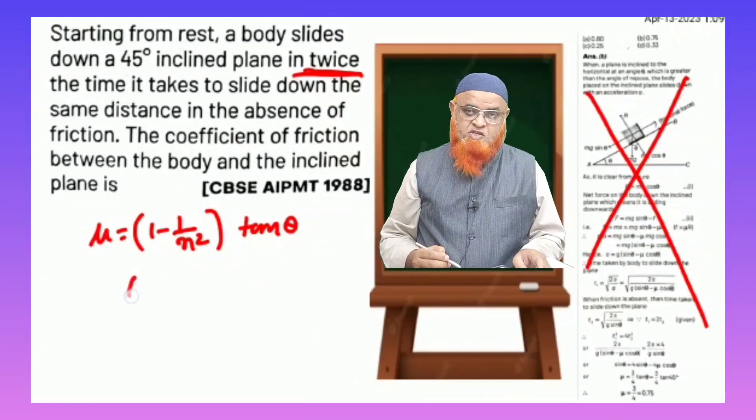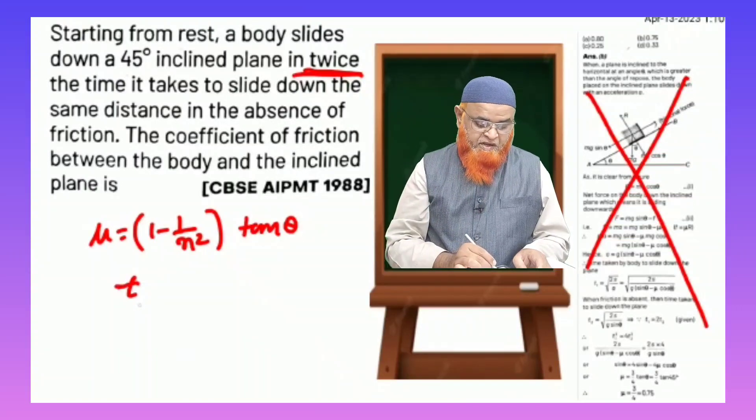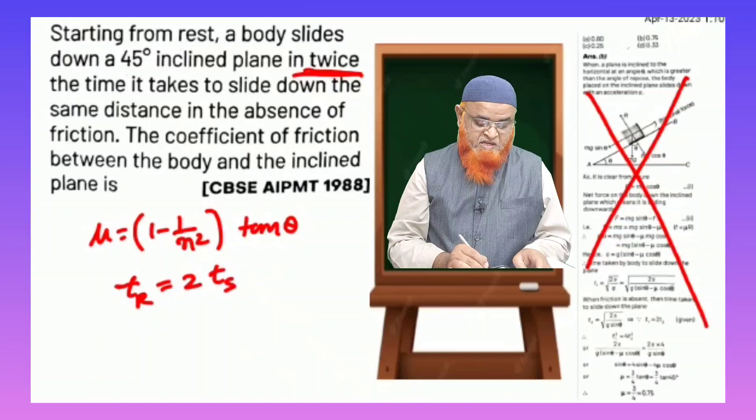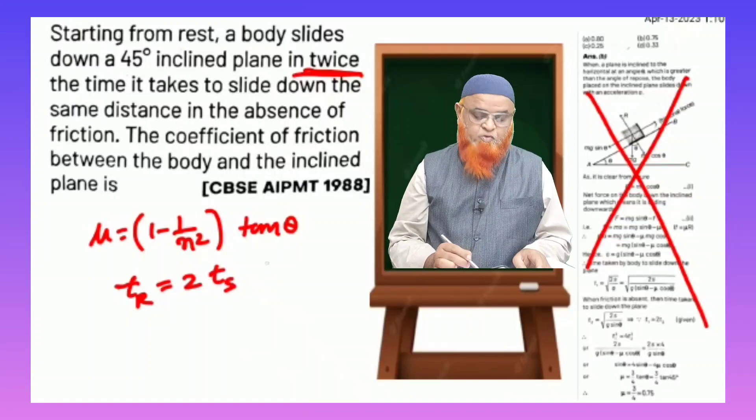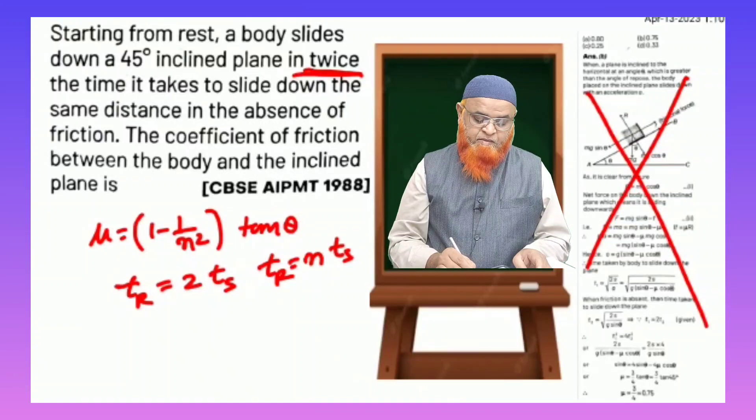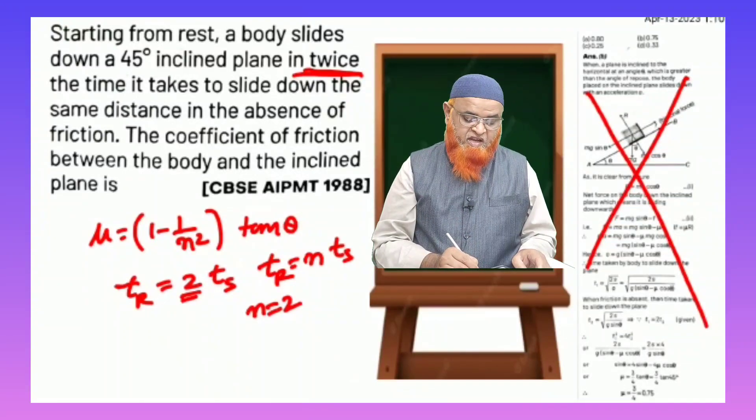Twice means time taken for a smooth inclined plane and rough inclined plane. For rough it is two times of time taken for smooth. That means time taken for rough is n times the time taken for smooth, and in this problem the value of n is going to be two, which is given here.